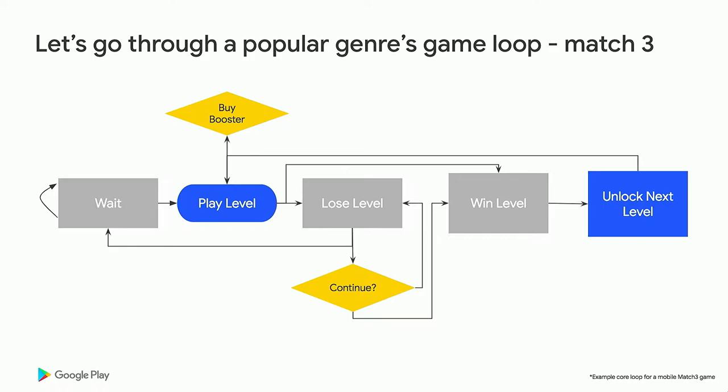Let's go through an example of a popular game genre: Match 3. Match 3 is a game where players match three of the same thing on a board — it could be food, candy, or gems — trying to achieve a variety of goals within a set number of moves. The most popular game on the market is Candy Crush. In the core game loop, a user plays a level and can either win or lose. If they win, they unlock the next level and continue playing. If they lose, they can use another life to attempt the level again, or wait until they have another life.